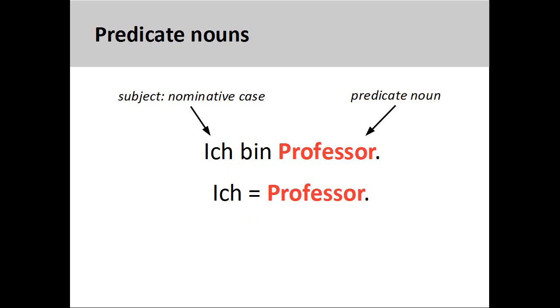It may be useful for you to think about predicate nouns and adjectives in terms of an equal sign. When a linking verb appears in a sentence, then both sides of the sentence — the subject and predicate — will be in the nominative case.